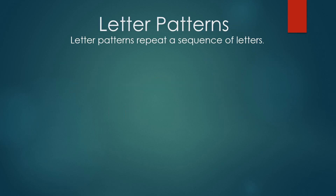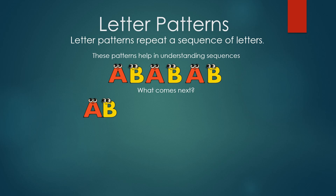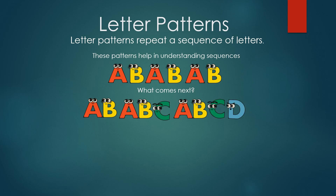Next is letter patterns. Letter patterns repeat a sequence of letters. These patterns help in understanding sequences. For example: AB, AB, AB, AB — what comes next? Again AB. One more example: AB, ABC, ABCD, and it goes on like that. Recognizing letter patterns can help young children learn to read and spell.